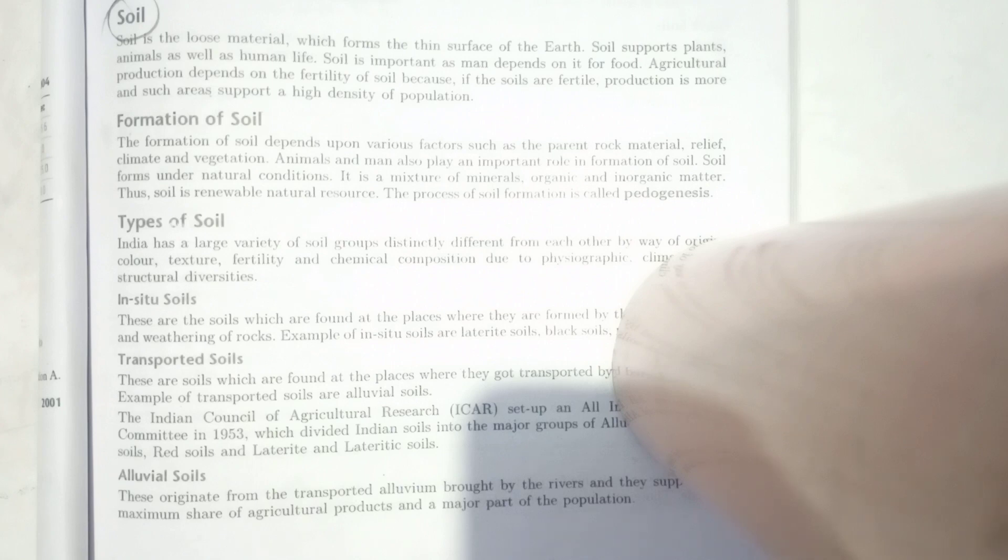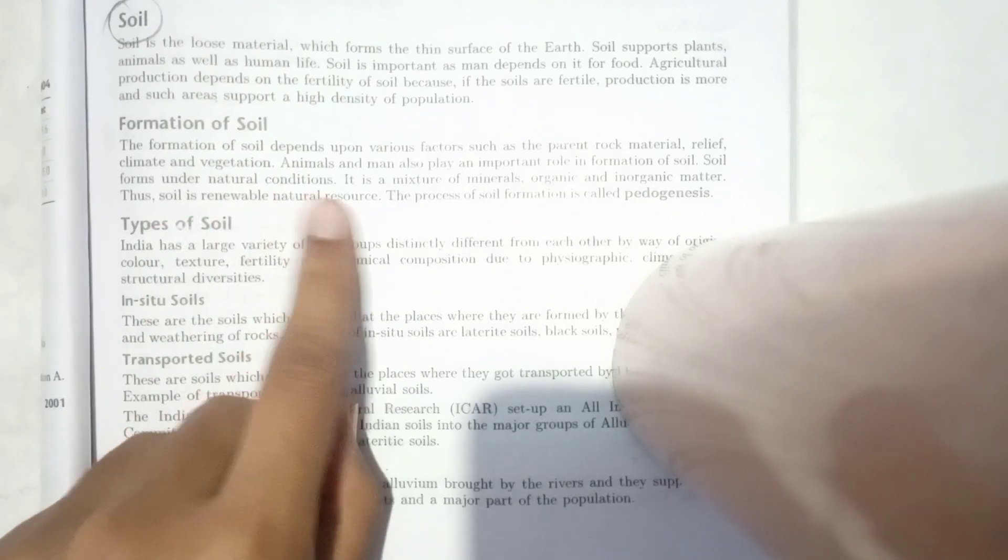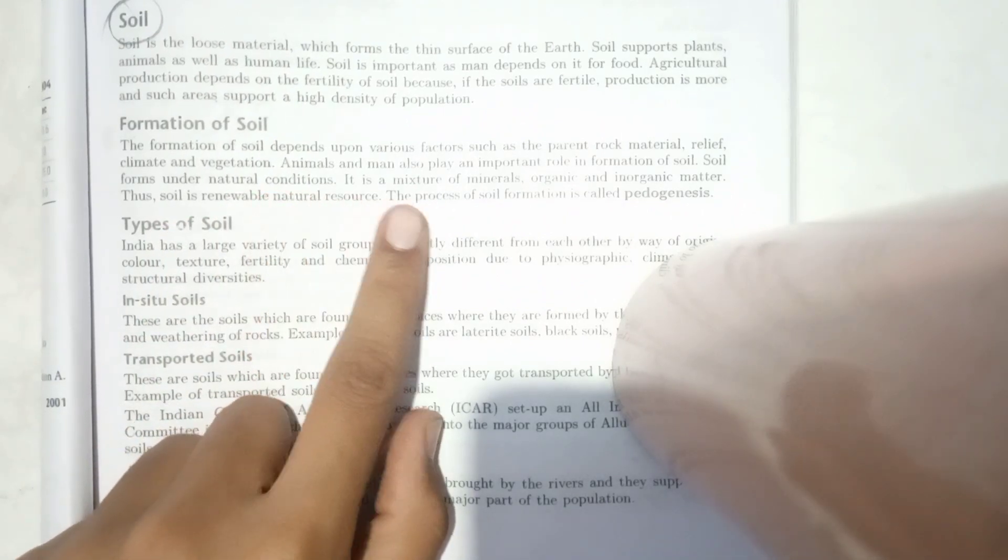Everyone in the food cycle - all food comes from the soil, so it is a very important resource. Now, how is soil formed? Soil